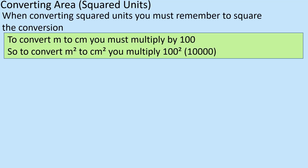When you're looking at converting square units, you've got to remember that you are multiplying not just one dimension — you're multiplying two dimensions. So if you have to go from metres to centimetres, you multiply by 100. But if you're going from metres squared to centimetres squared, because you're talking two dimensions, you multiply by 100 in both dimensions — so 100 squared — which is 10,000.